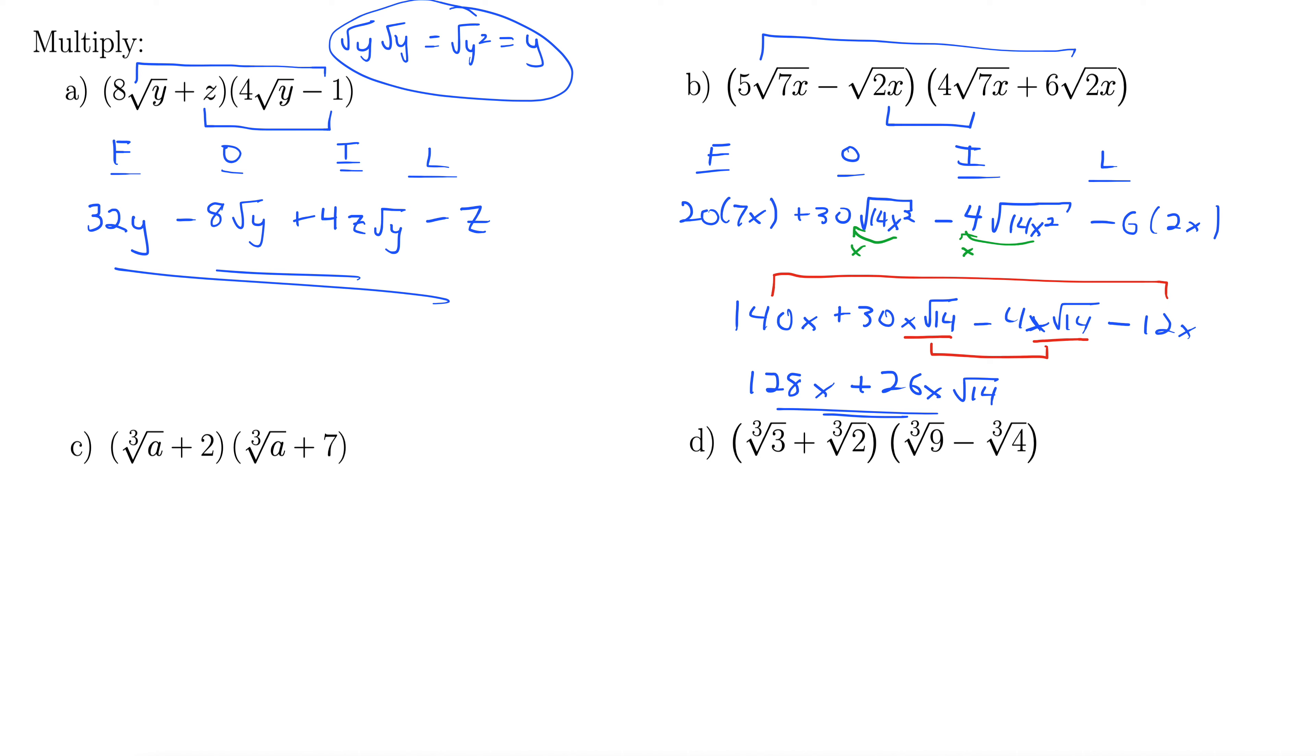Part c looks a little strange, but we still use FOIL. Here we have cubed root of a plus 2, all that times quantity cubed root of a plus 7. Hit it with the FOIL. Binomial times binomial, FOIL is the way to go. First is cubed root of a times cubed root of a. Cubed root of a times cubed root of a, these are the same index, so we can combine like so. Cubed root of a squared. They combine under the radical. So the first here is cubed root of a squared.